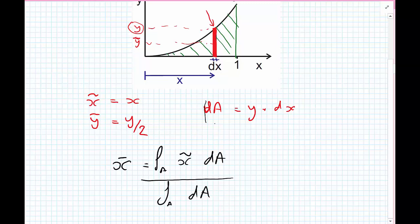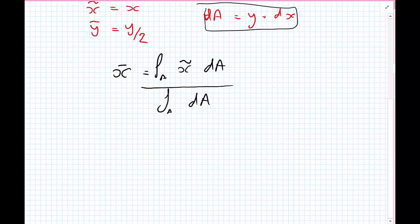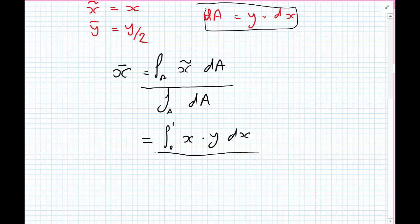And we're going to substitute back in what we know about dA. So substituting for dA, we get the integral, and now we can put the limits of this integral. We're going between 0 and 1 along the x-axis, and we've got x dot y dx divided by the integral between 0 and 1 of y dx.